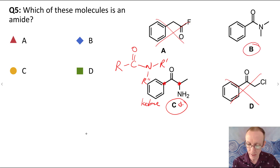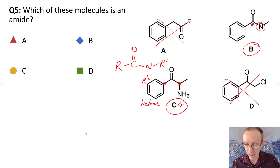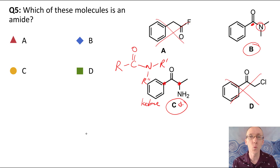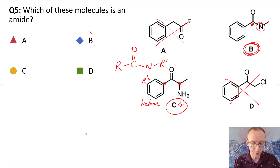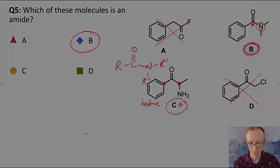B is the amide — it has the carbonyl carbon bonded directly to a nitrogen. It doesn't matter that the nitrogen has no hydrogens: we can have amides with either two, one, or zero hydrogens, and we classify those as primary, secondary, or tertiary. So B is the only amide amongst that group of compounds. The answer here is B.